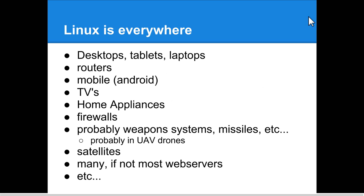Linux is everywhere. It's on desktops, laptops, routers. It's on mobile with Android. It's in your TVs, home appliances, firewalls. It's probably on weapons systems, missiles, UAV drones, and satellites. And it's probably running on most web servers. An operating system is best described as an interface to the hardware for users.